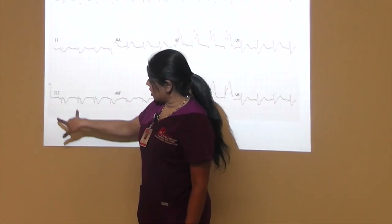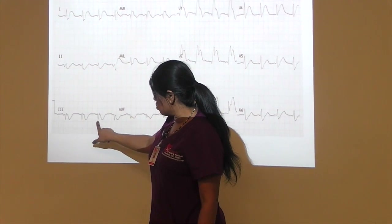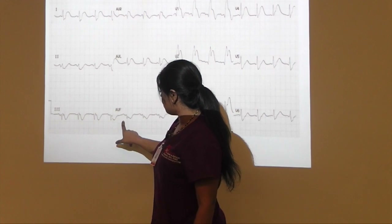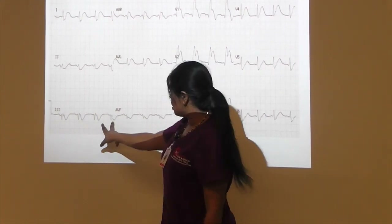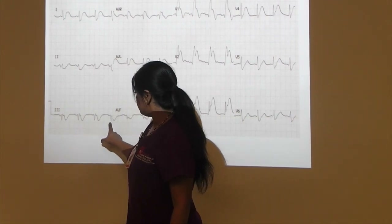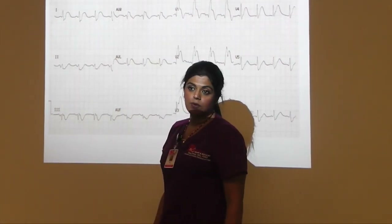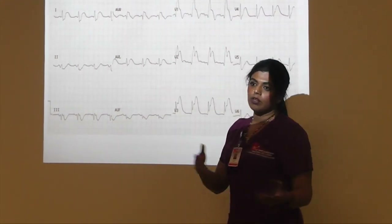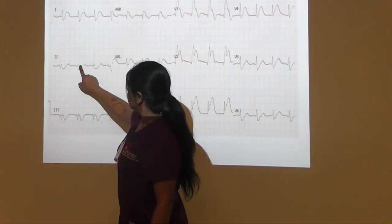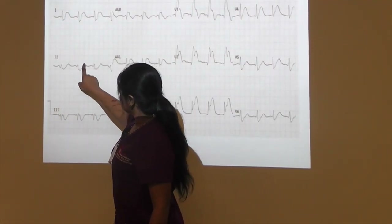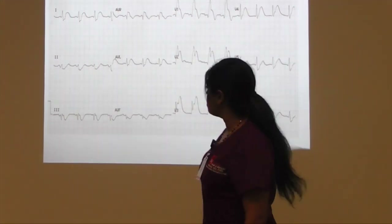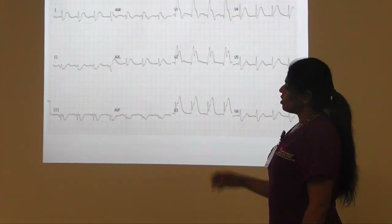Then you look at your rate. You start off with one QRS and count: 300, 150, 100, 75, 60, 50, 40. You take two QRSs — that's almost 300, 150, 100 — probably about 80 beats per minute average. Nobody really cares between 81 and 85; you're looking at a rounded figure. So this is probably about 85 beats a minute. That's your rate and rhythm.